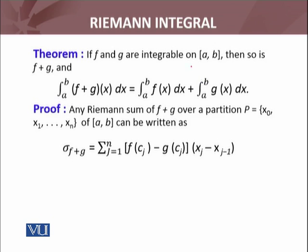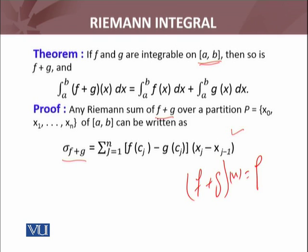Consider any Riemann sum of f plus g on the interval [a, b]. Any Riemann sum of f plus g over a partition P of [a, b] can be written as sigma(f plus g). We know that f plus g is defined as f of x plus g of x, so by definition this Riemann sum equals the corresponding expression.